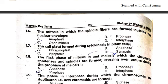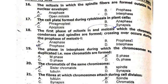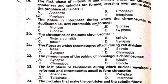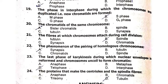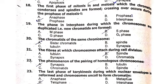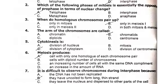The cell plate formed during cytokinesis in plant cells is the phragmoplast. The phase of mitosis and meiosis in which chromatin condenses and spindles are formed — crossing over occurs during the prophase of meiosis I — is prophase. The phase of interphase during which chromosomes are duplicated is S phase. Chromatids of the same chromosome are called sister chromatids. The fibers to which chromosomes attach during cell division are spindle fibers. The phenomenon of pairing of homologous chromosomes is known as synapsis. The last phase of karyokinesis during which the nuclear envelope is reformed and chromosomes uncoil to form chromatin is telophase. The proteins that make the centrioles and spindle fibers are known as tubulin protein.